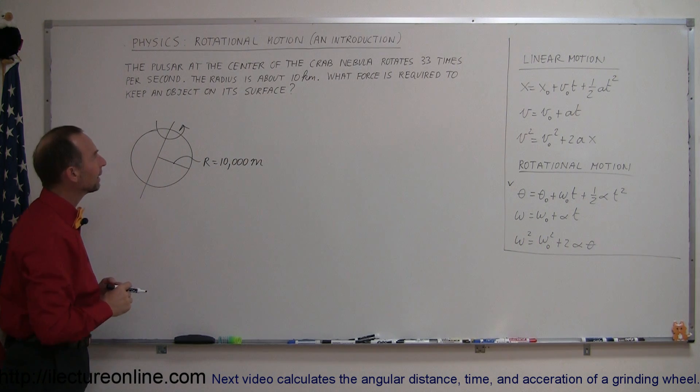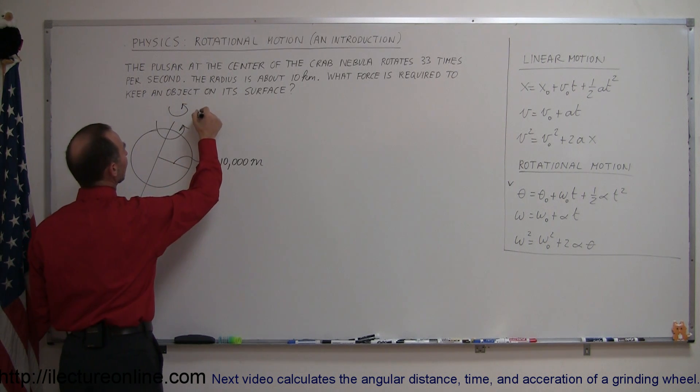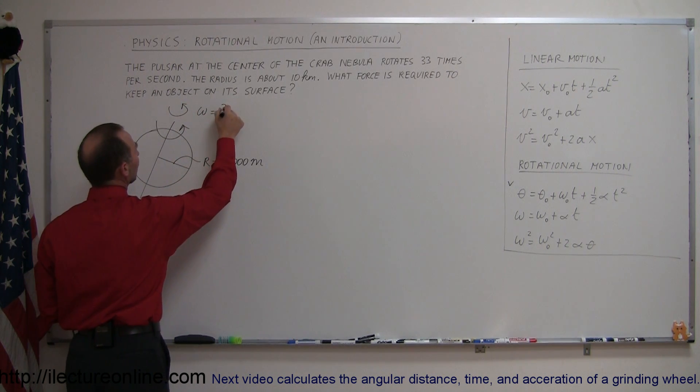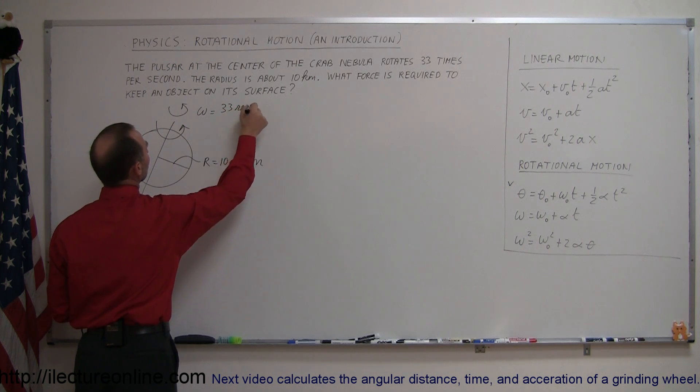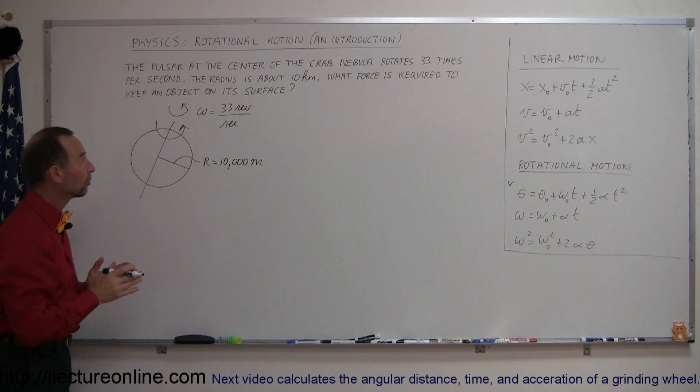And it's rotating in such a way that the angular velocity, omega, is equal to 33 revolutions per second, and of course we're going to have to convert that to radians per second.